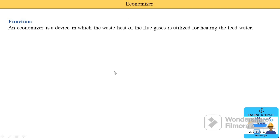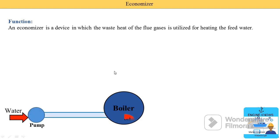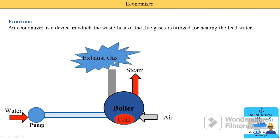Now I will show you the location where it is installed. In a boiler, we supply water, some fuel, and air — so three things are supplied. The output is also three: one is the steam, the second is the exhaust gases, and the third is the ash. This is the common construction of the boiler.